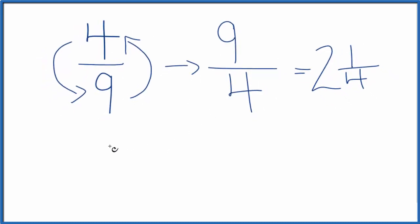We can check our work. We could say 4 ninths, that's what we started with, and multiply it by its reciprocal, 9 fourths. If this equals 1, we did the first part correctly.